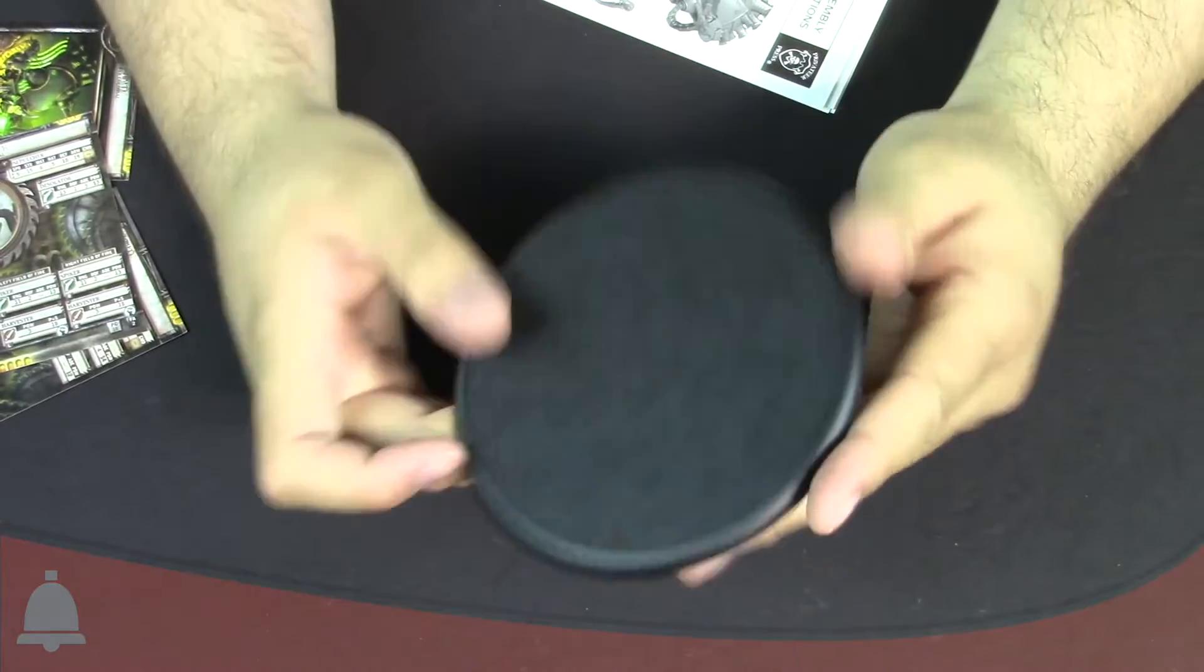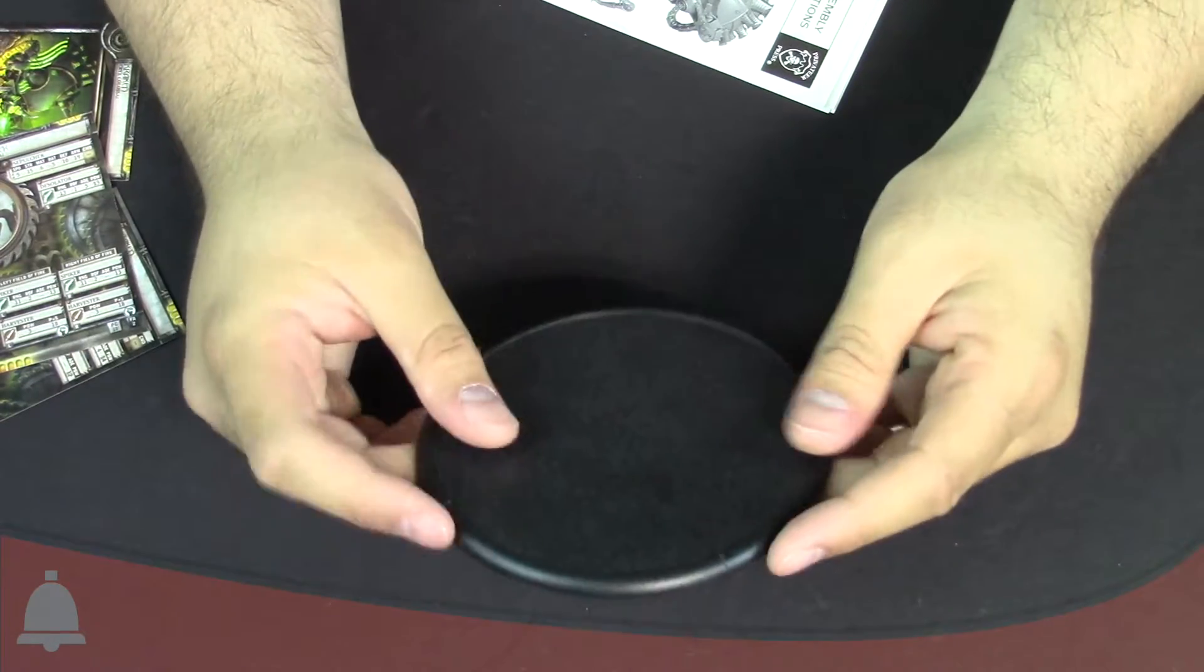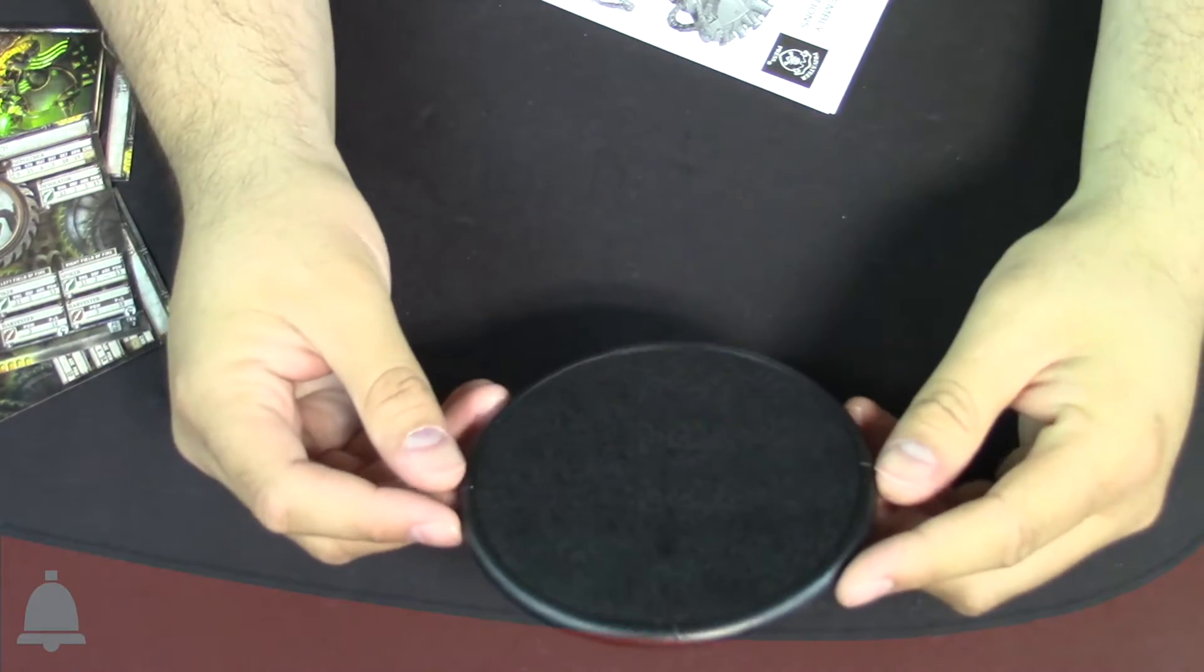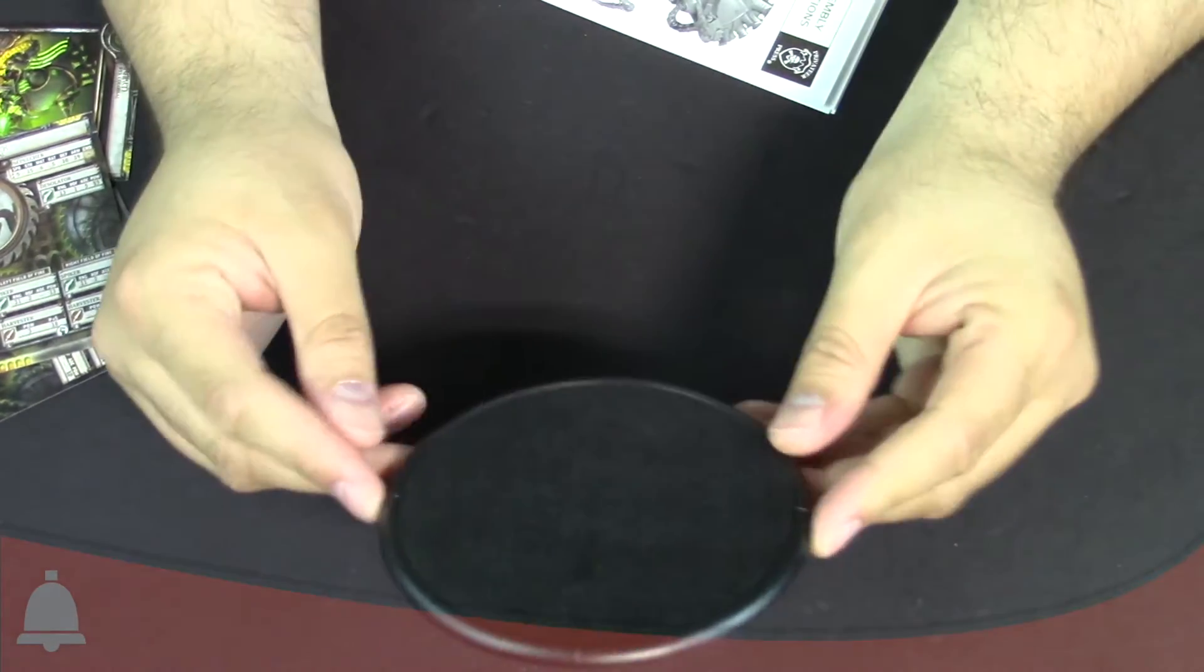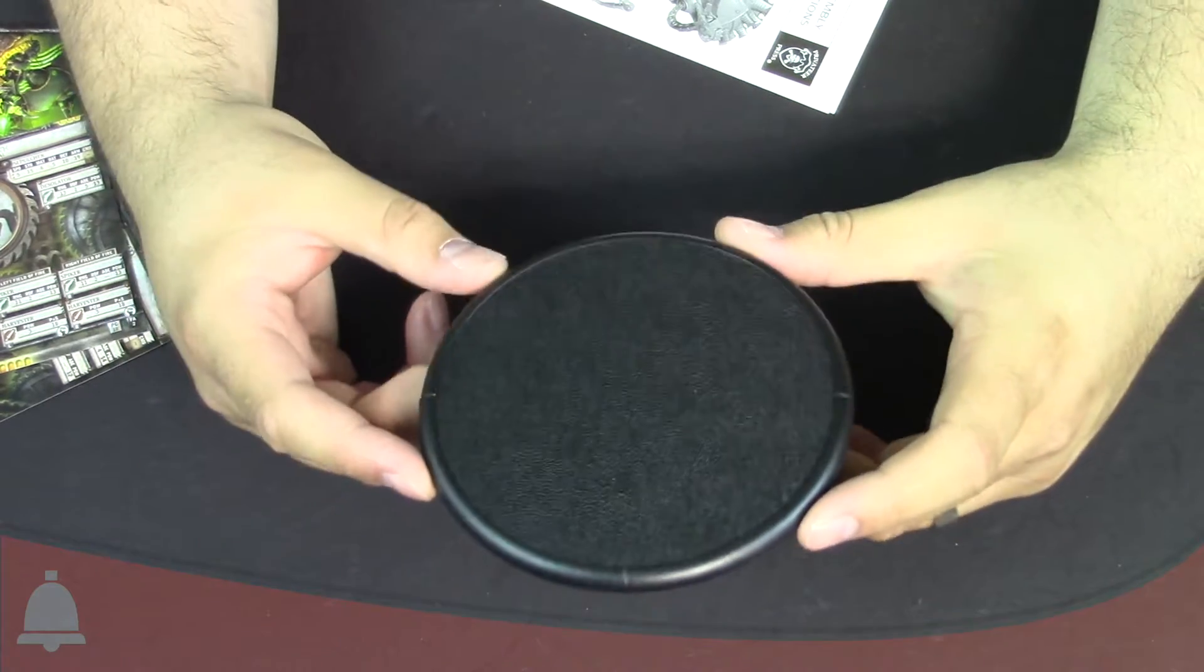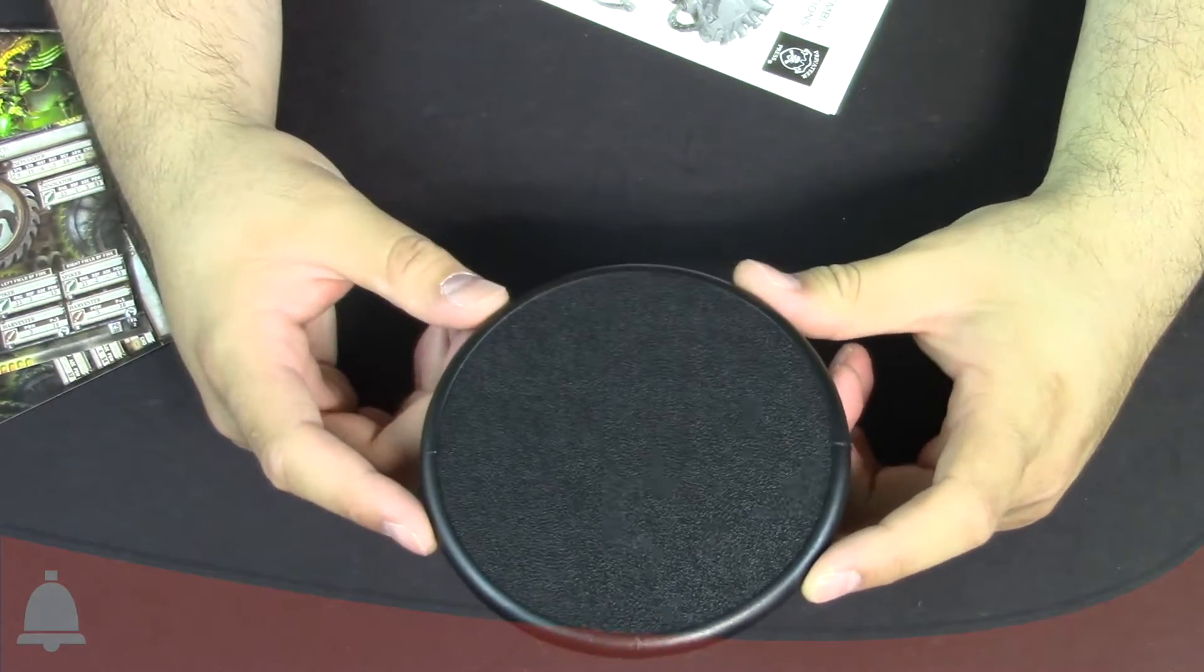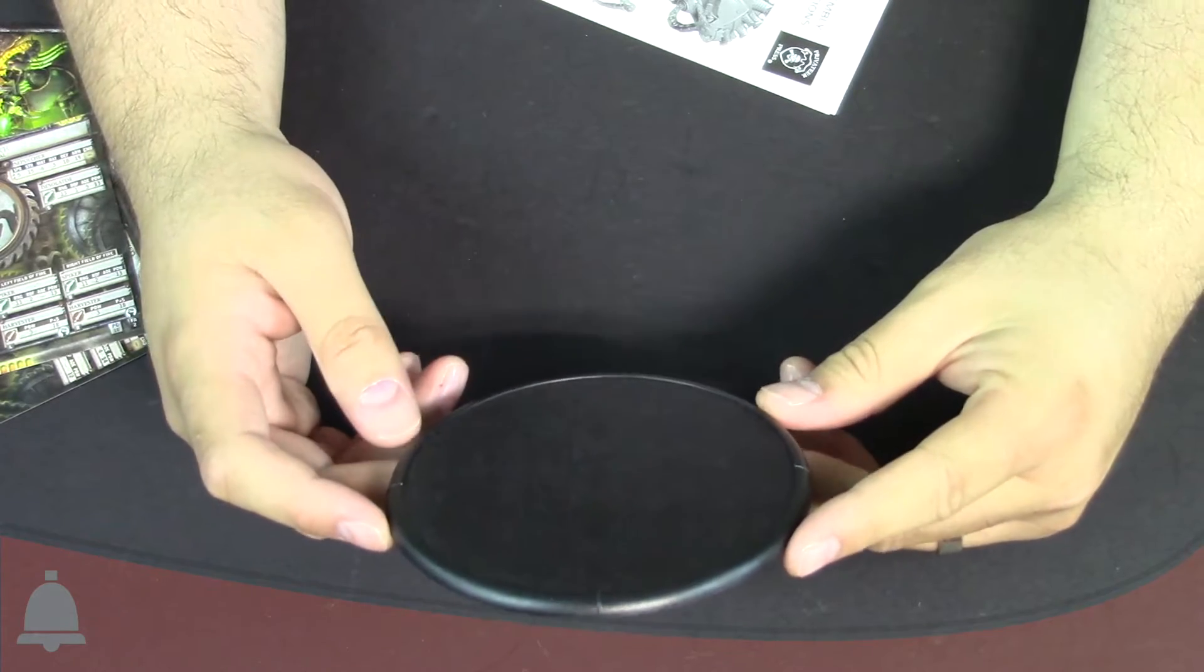And then of course we've got to dump the rest of the box out. We've got our frisbee disc of a base, which I kind of like the colossal bases because they actually have markings where you can actually see the front arcs. So I like that, just because I kind of wish the regular bases had those markings.